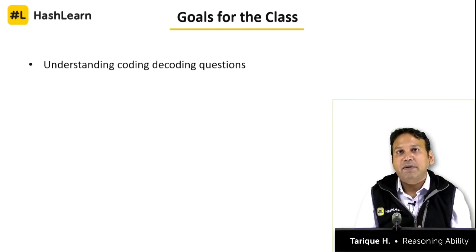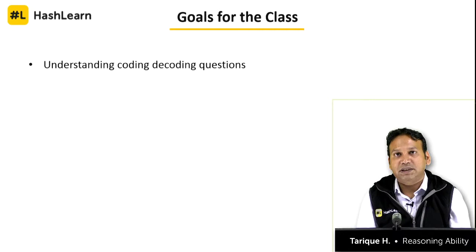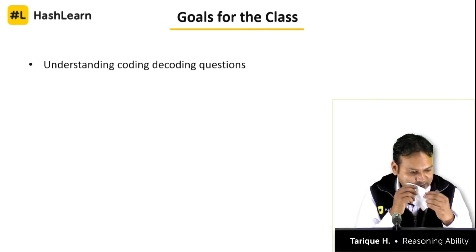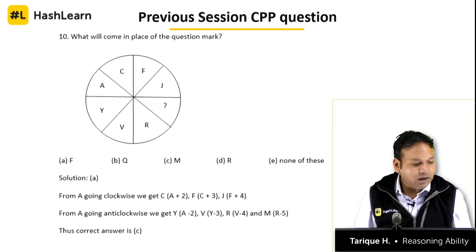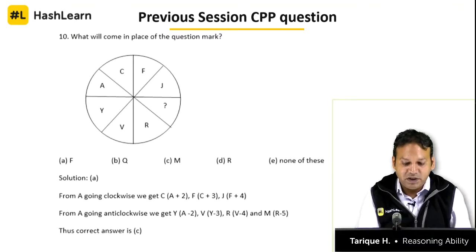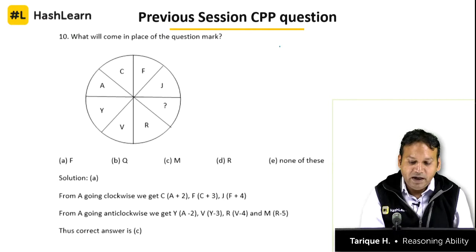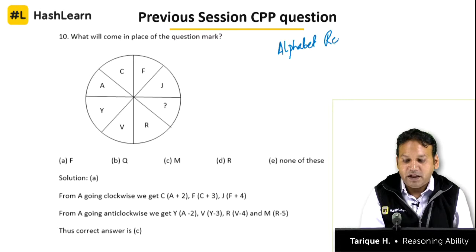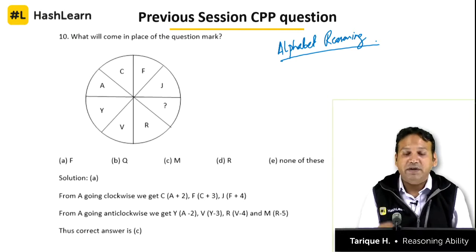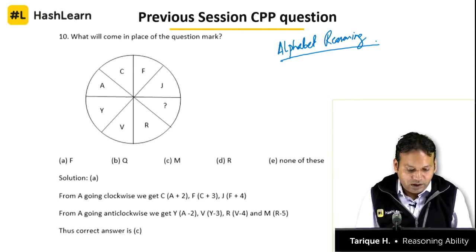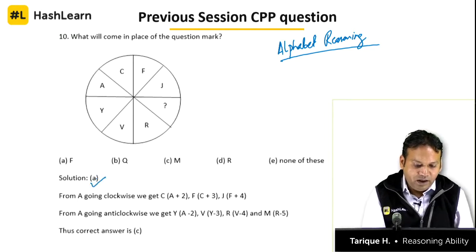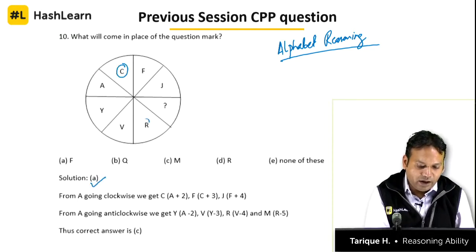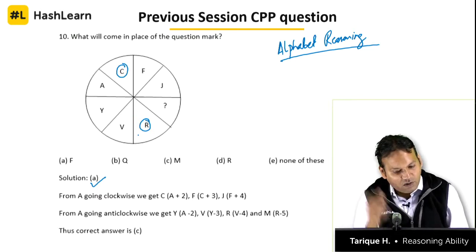The flow of the class will be based on discussion of problems — we will be developing concepts through the flow of questions. Let us look at a previous session CPP question: what will come in place of the question mark in this particular grid? This is based on alphabet reasoning from session 4, based on grid and diagram questions. The answer is A. If you look at C and R and their positional values — from A going clockwise, A plus 2 gives C, plus 3 gives F, plus 4 gives J.